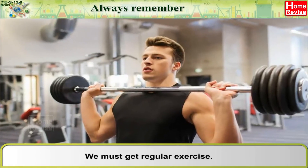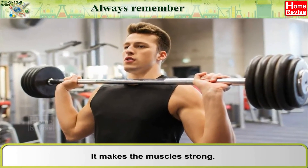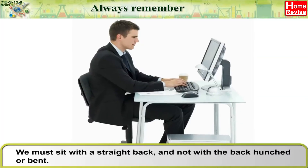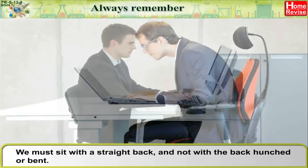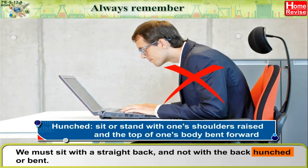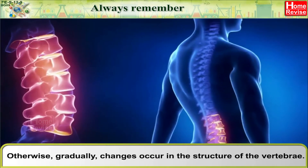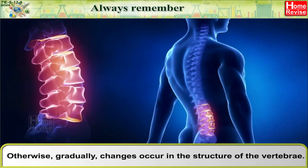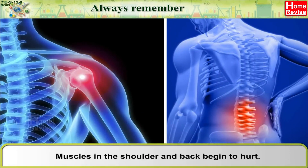We must get regular exercise — it makes the muscles strong. We must sit with a straight back and not with the back hunched or bent forward. Otherwise, gradually, changes occur in the structure of the vertebrae. Muscles in the shoulder and back begin to hurt, and disorders of the vertebral column may also arise.